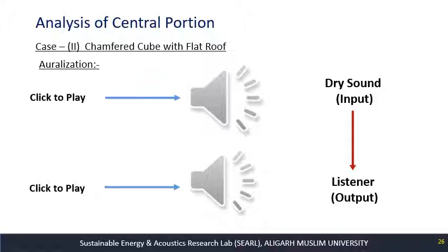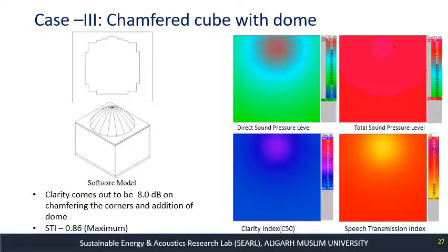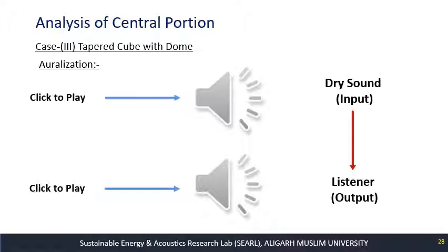Just by chamfering of the walls, the acoustical characteristic of the building was completely changed. As a next step, a dome was added on top of the chamfered building. The clarity still increases slightly from Case 2, though not as large a jump, and there is also an increment in the Speech Transmission Index. The auralized sound with the dome — while the numbers show improvement — is only a very subtle difference to the ear compared to the chamfered-wall case.